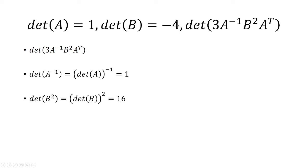Moving on to the determinant of B squared, the exponent comes outside the determinant. So first we calculate the determinant of B, which is negative 4, square that and get 16.